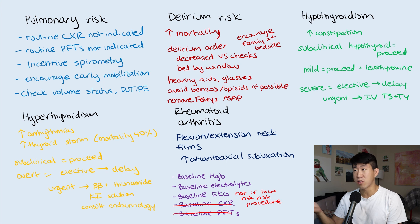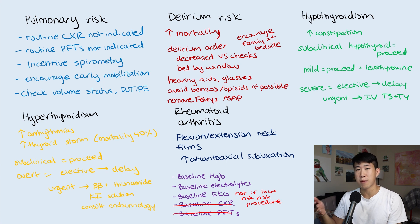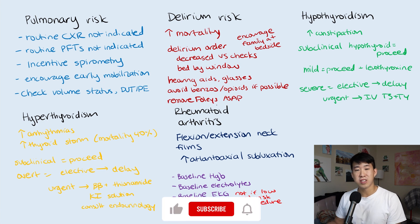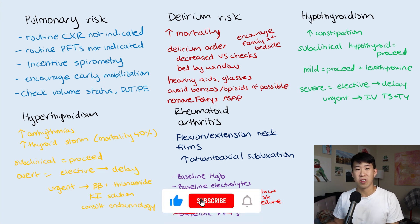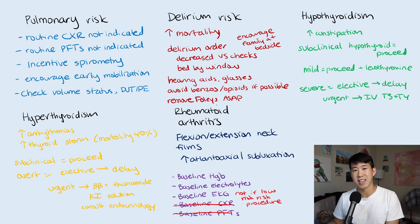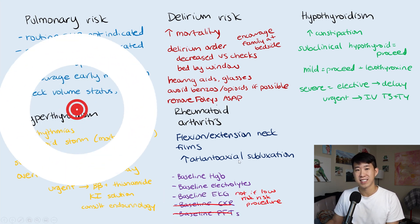That covers this topic. We went through hepatic risk assessment, adrenal insufficiency, and miscellaneous topics including pulmonary, delirium, thyroid, and rheumatoid arthritis. I hope you learned something and that this helped you on your path to being a star at perioperative management. Thanks for watching — see you in the next video.